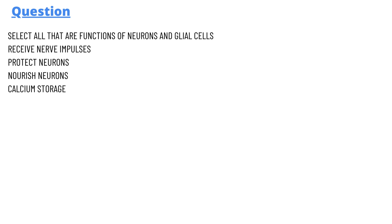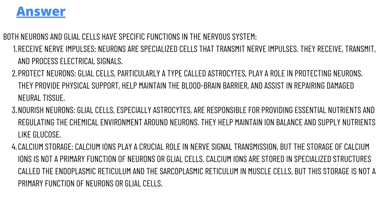We have some options here: receive nerve impulse, protect neurons, nourish neurons, calcium storage. And the answer of the question is that both neurons and glial cells have specific functions in the nervous system.